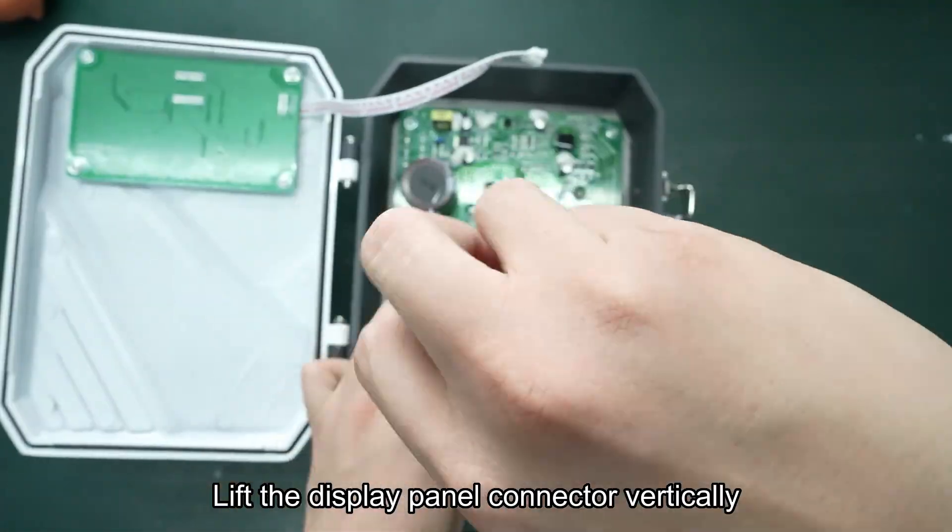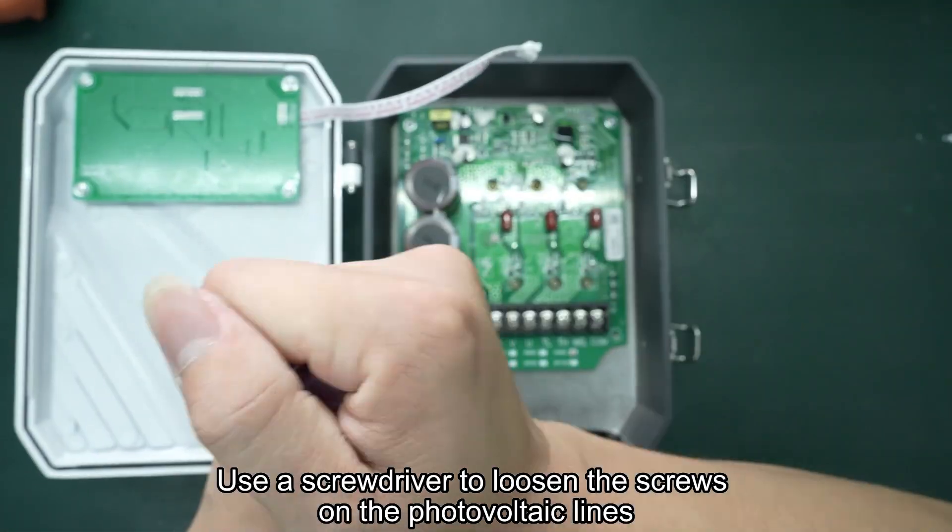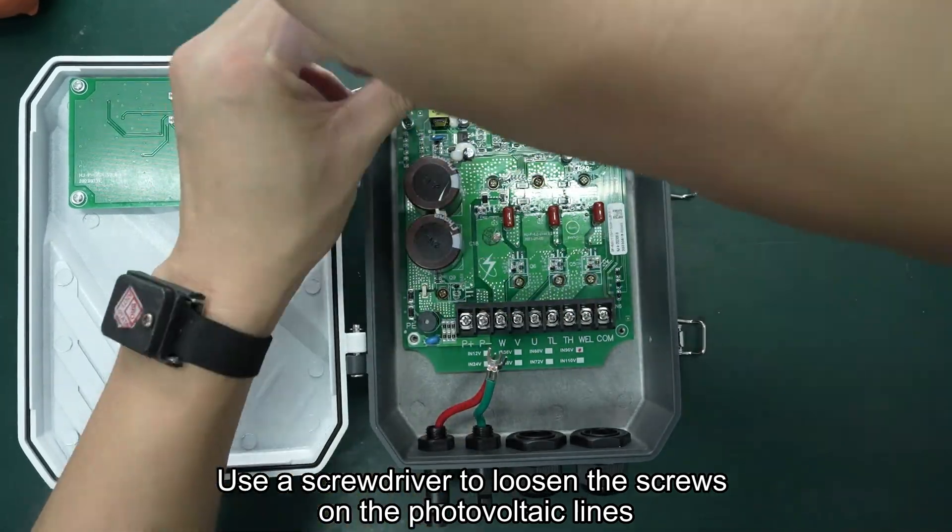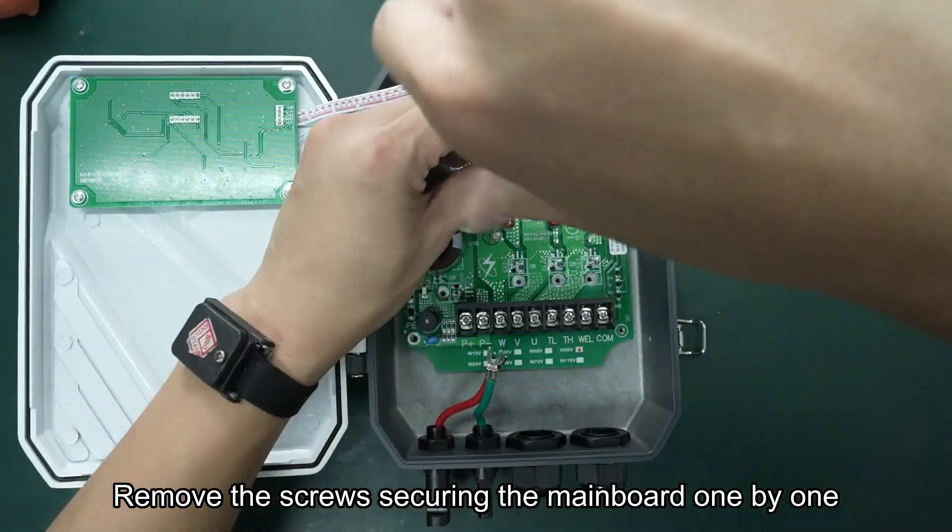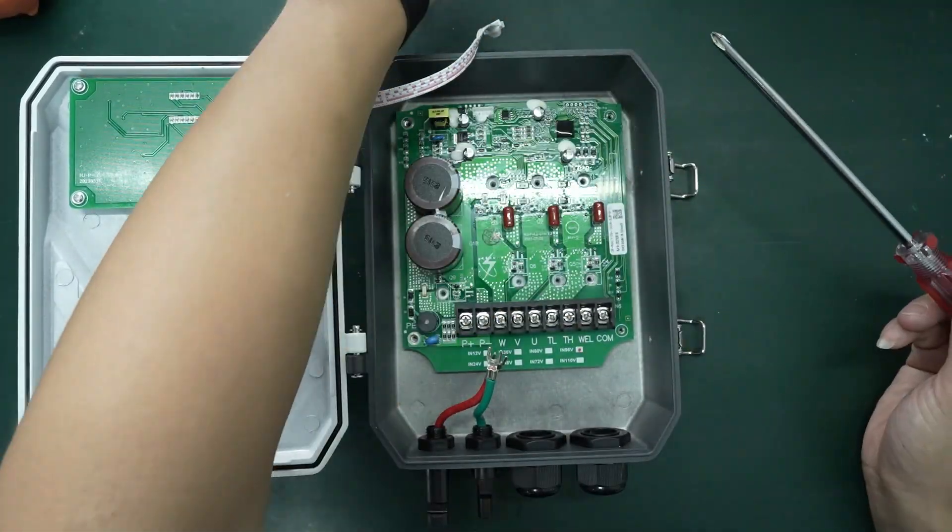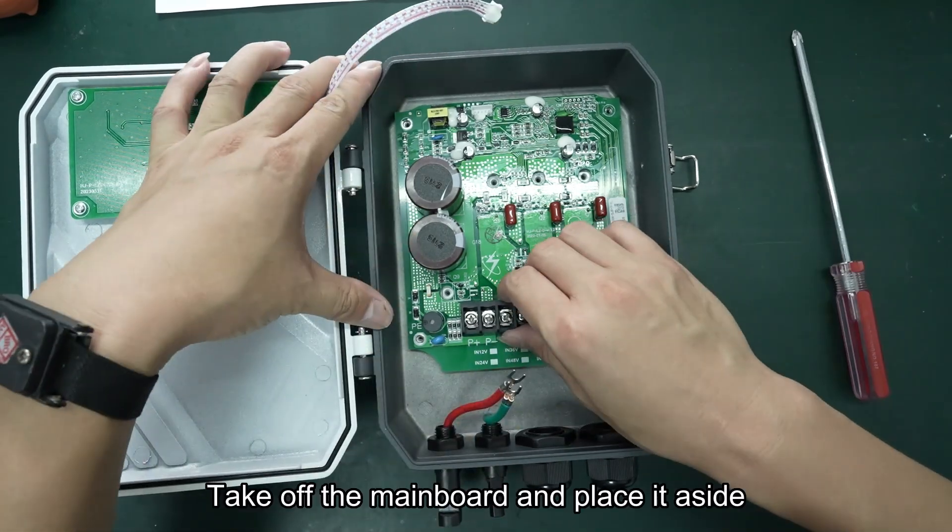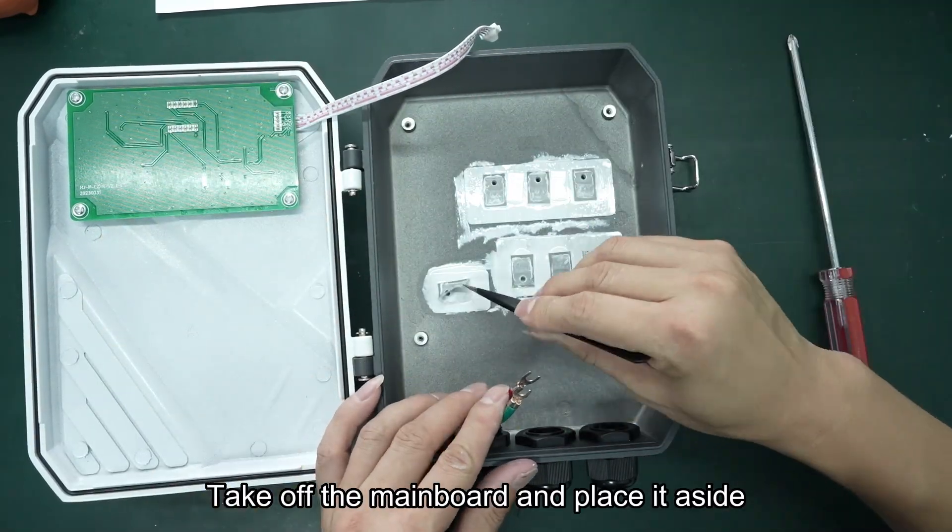Lift the display panel connector vertically. Use a screwdriver to loosen the screws on the photovoltaic lines. Remove the screws securing the main board one by one. Take off the main board and place it aside.